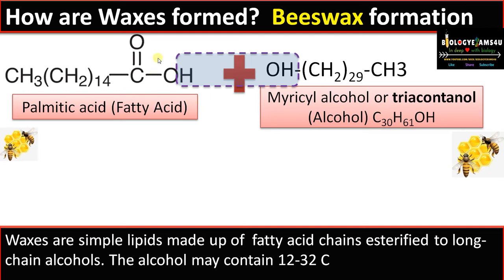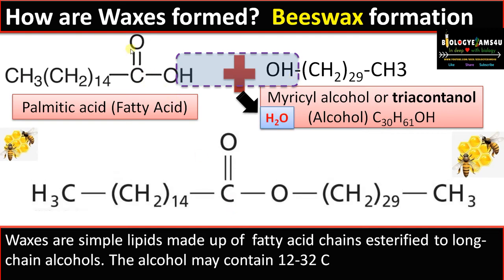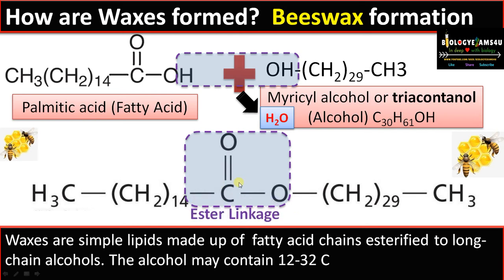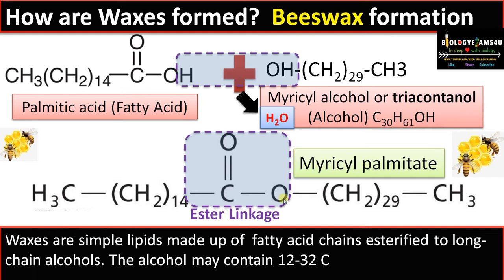What is happening is the OH of the carboxyl group of the fatty acid reacts with the OH, or hydroxyl group, of the alcohol, thus removing water. The result is a C double bond O — C-O linkage. This linkage is called the ester linkage. So waxes are made up of long chain fatty acids joined to long chain alcohols by an ester linkage. This product is called myricyl palmitate.